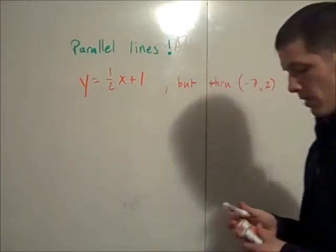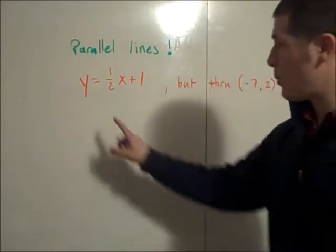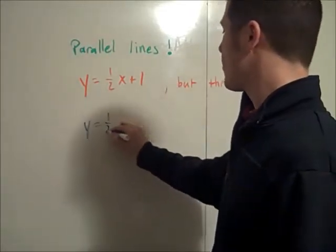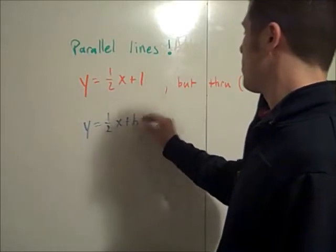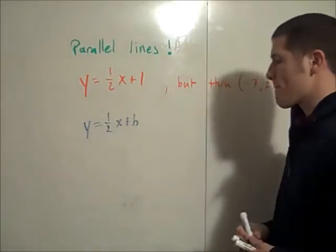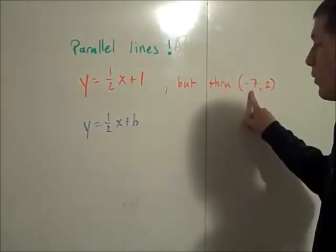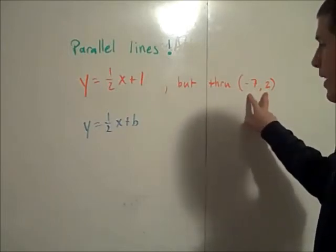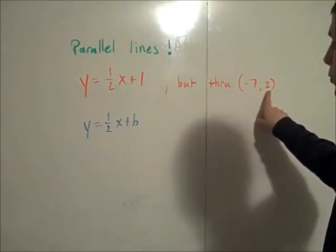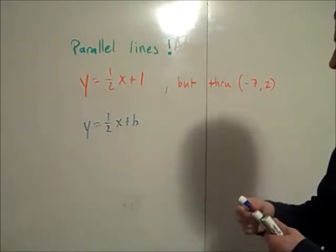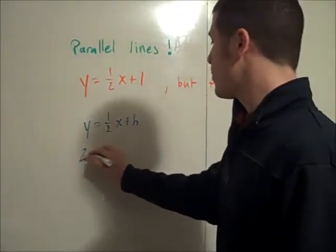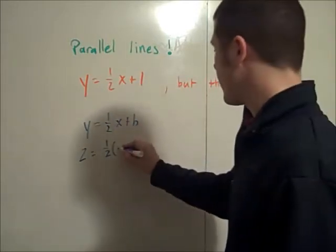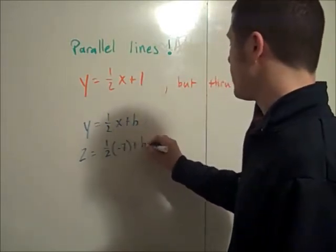Okay so in this case we know that our slope is going to be 1/2. So we have y equals 1/2x plus b. Now we have to plug in this point for x and y. Plug in the 2 for the y value and -7 for the x value. So we have 2 equals 1/2 times -7 plus b.